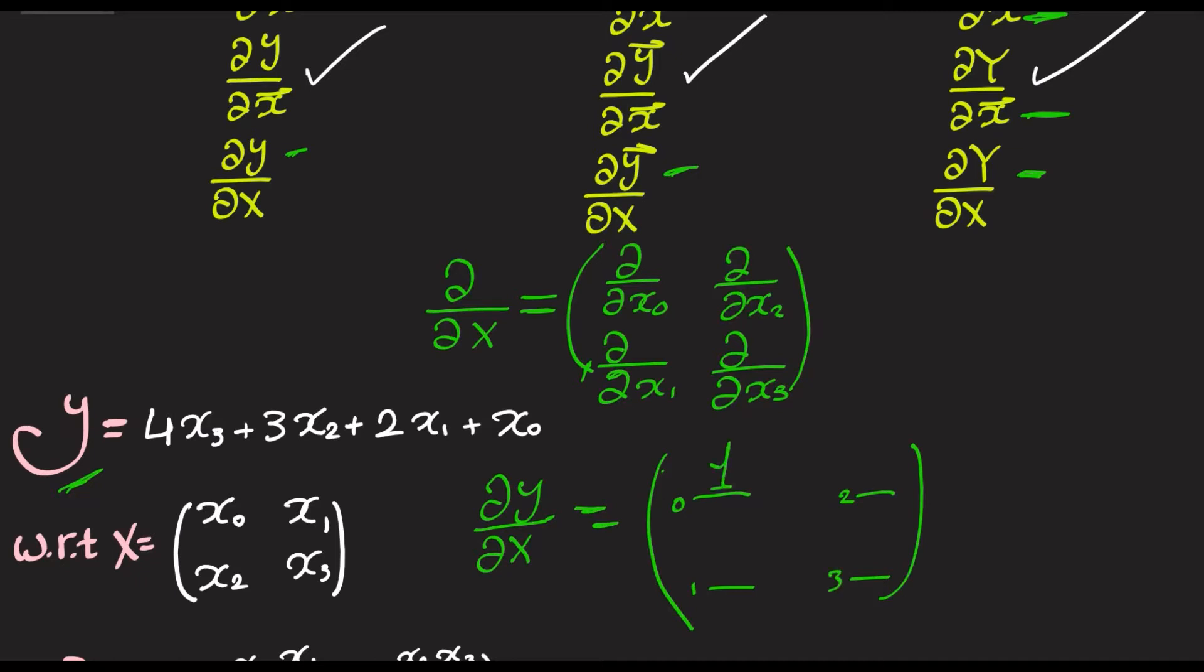So, for x0, it's going to be 1, and for x2, it's going to be 3, and for x1, it's going to be 2, for x3, it's going to be 4. So, this is basically how to differentiate a scalar with respect to a matrix.